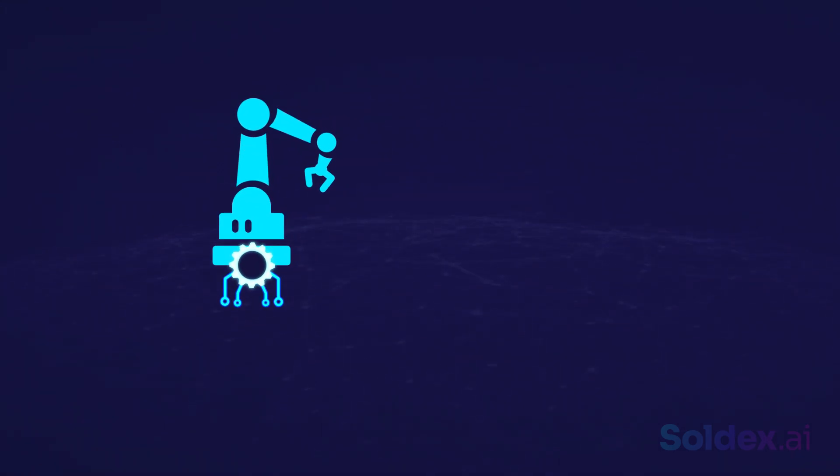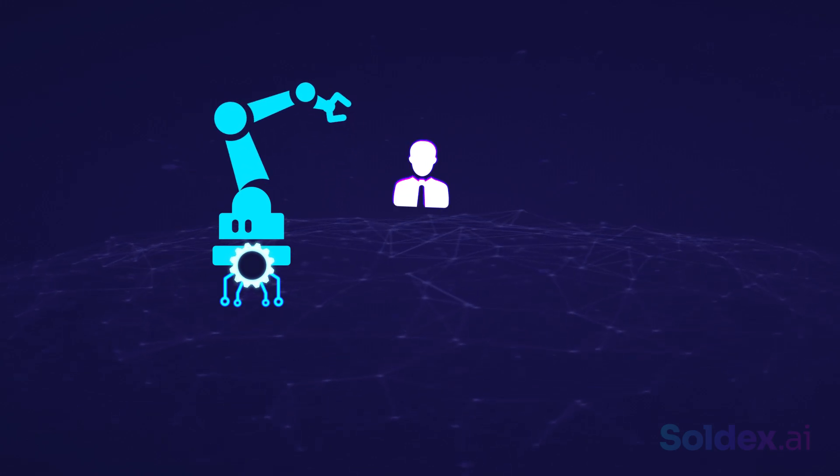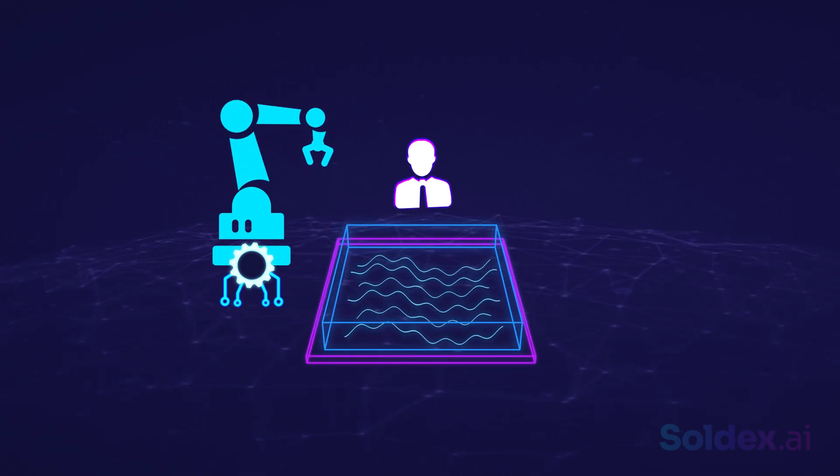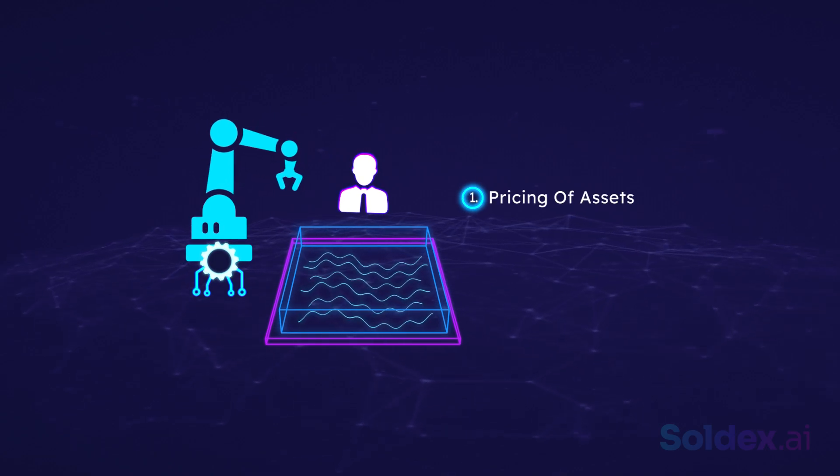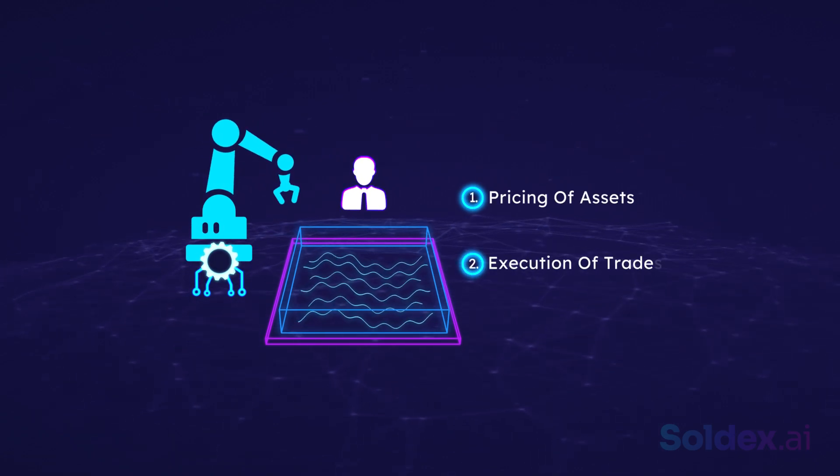AMMs work like robots that execute trades between you and the liquidity pool. They achieve two things. One, pricing of assets. Two, execution of trades.